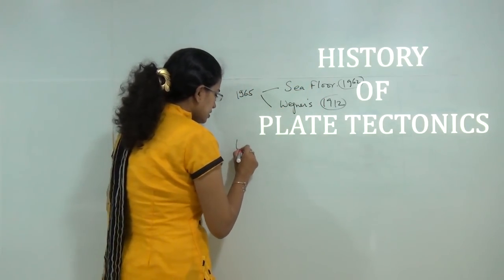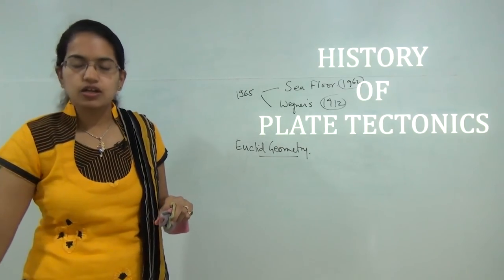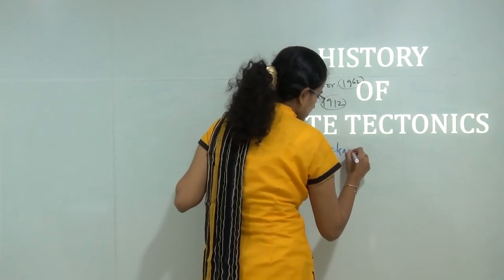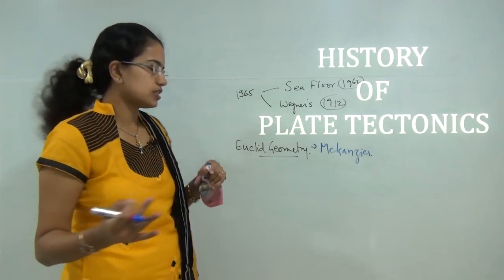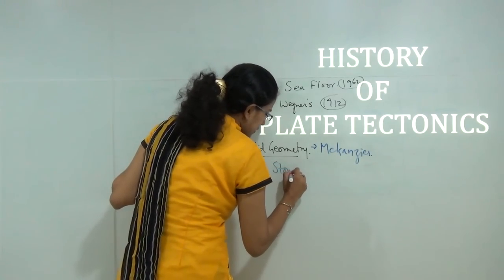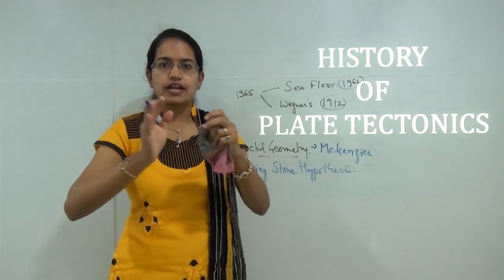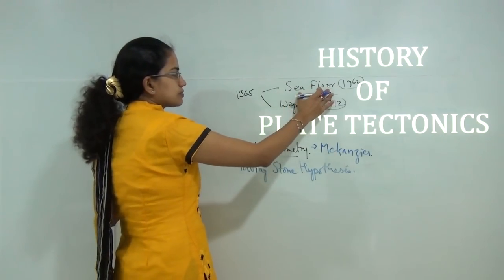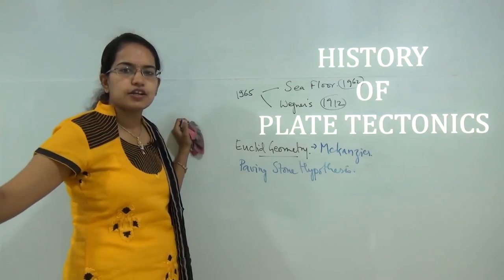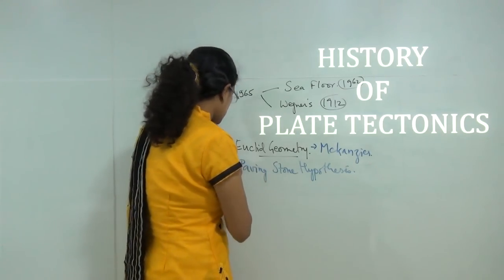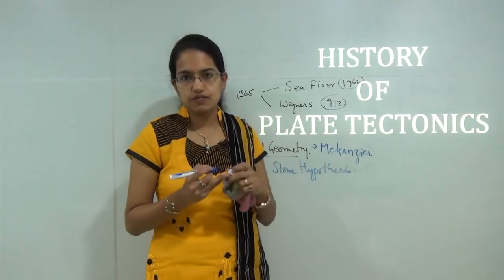Later on, Lucid's geometry was also laid forward as a basic mechanism to understand the concept of plate tectonics, and this was given by McKenzie. Understanding this concept of geometry, there was another hypothesis propounded which was known as the paving stone hypothesis. The paving stone hypothesis suggested that structures are created towards the ridges and consumed towards the periphery or the trenches. It was Isaacs and Sikhs who tried to understand and explain this in a further systematic manner.